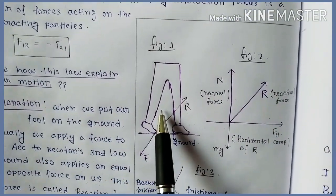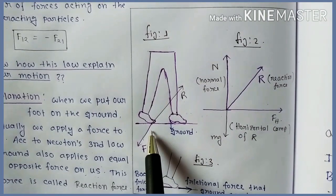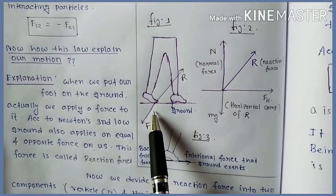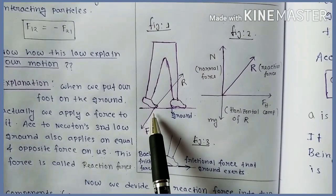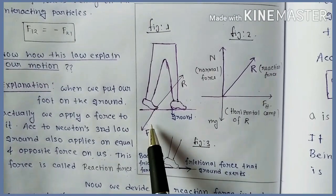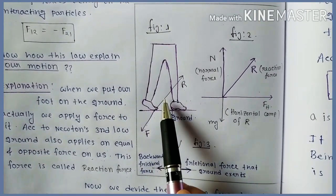In figure 1, the shoes and the ground are the two interacting particles. When we walk, our shoe applies the force F and the reaction force is R.